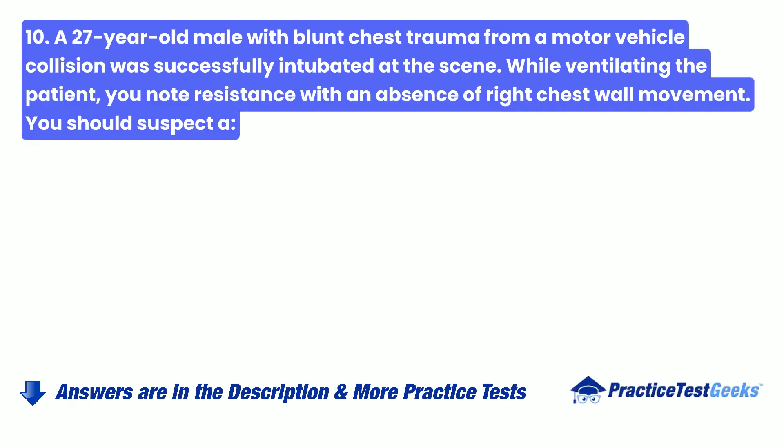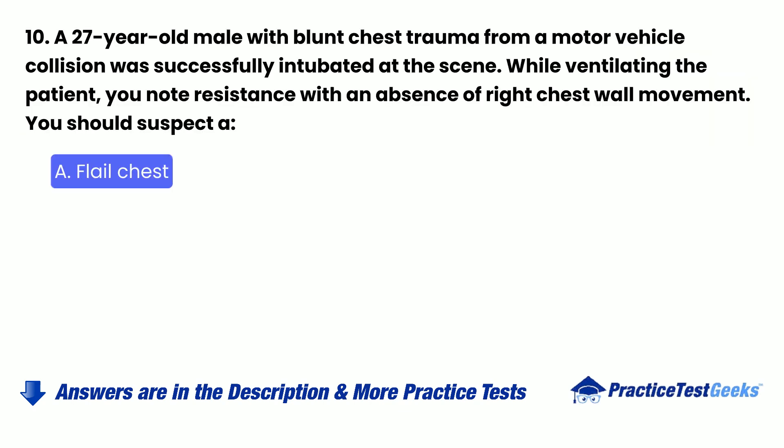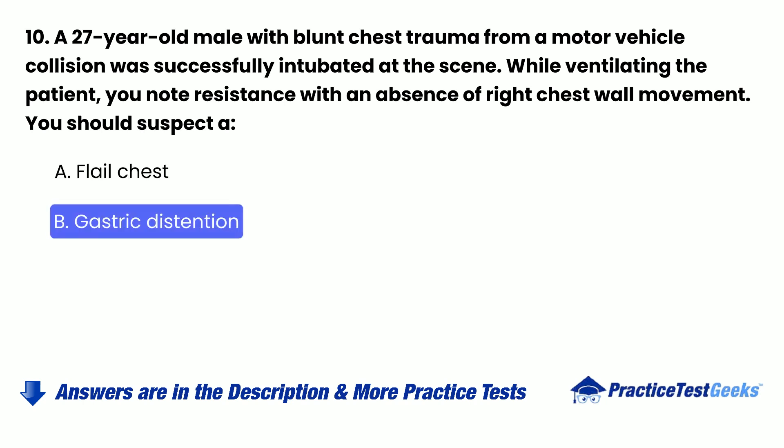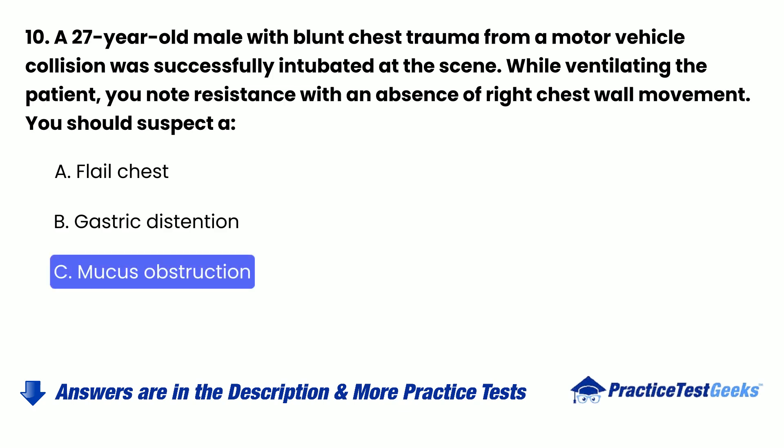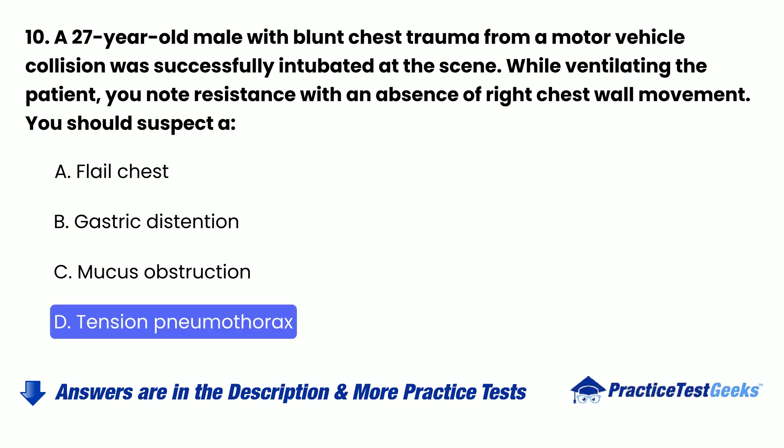Question 10: A 27-year-old male with blunt chest trauma from a motor vehicle collision was successfully intubated at the scene. While ventilating the patient, you note resistance with an absence of right chest wall movement. You should suspect: A. Flail chest. B. Gastric distension. C. Mucous obstruction. D. Tension pneumothorax.